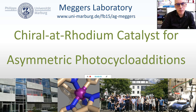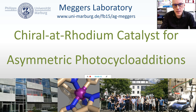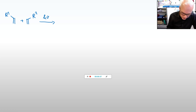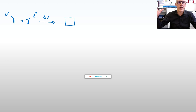Welcome to my channel. My name is Eric Magas and I want to tell you a little bit about how we can control asymmetric photocycloadditions — 2+2 photocycloadditions — with our signature chiral atrhodium catalyst. From organic chemistry 101, you know that two alkenes can react with each other in the presence of UV or visible light to form cyclobutanes: a nice reaction where two alkenes dimerize and we form two new C–C bonds.